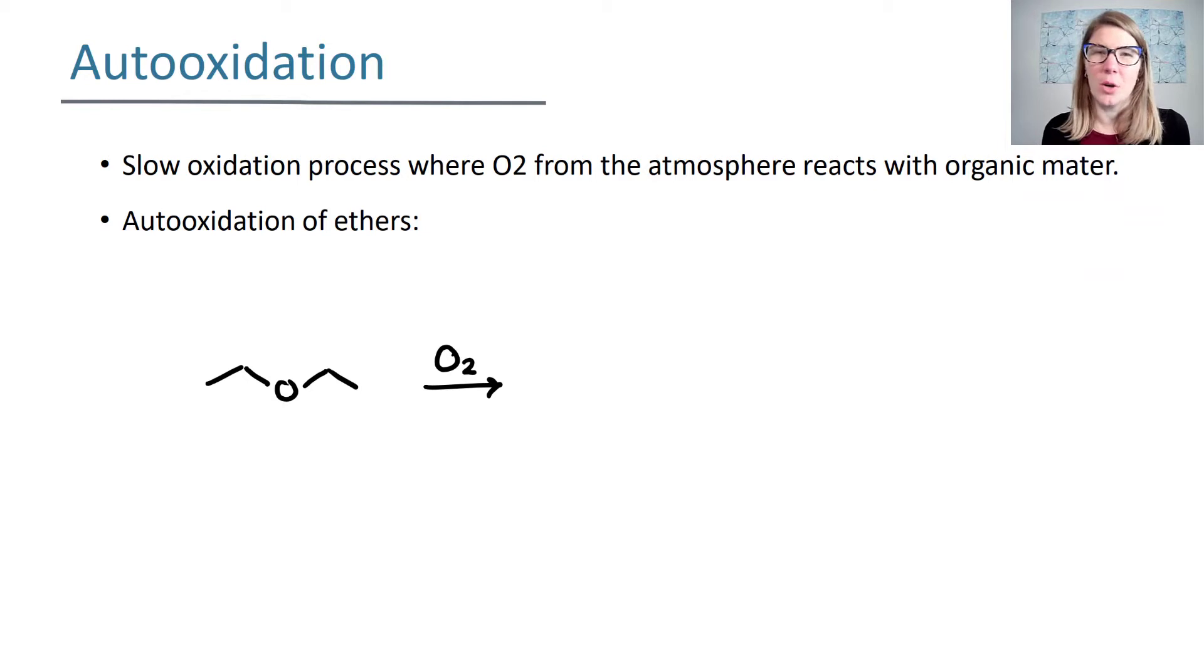Auto-oxidation is a really slow process and it happens with a variety of organic matter including functional groups like ethers. Here I have an ether where I have an oxygen and then two alkyl groups on either side. When an ether encounters the oxygen from the air over a long period of time, it's going to end up going through a process where adjacent to the oxygen you get an OOH group. That's a peroxide group when you have that OO bond.